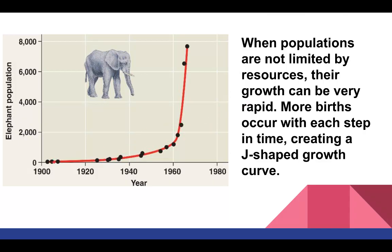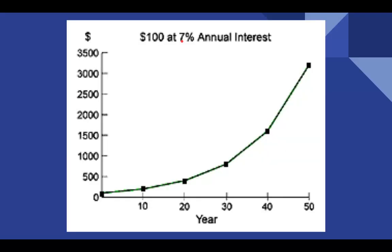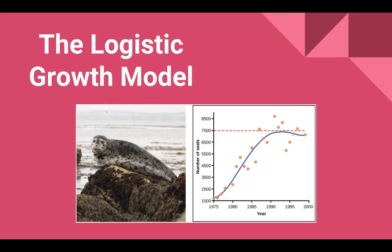Same deal with populations growing exponentially. At first we don't have many elephants that are sexually mature and populations are low. But eventually, as population increases and sexually mature individuals are high in numbers, that population spikes as well.